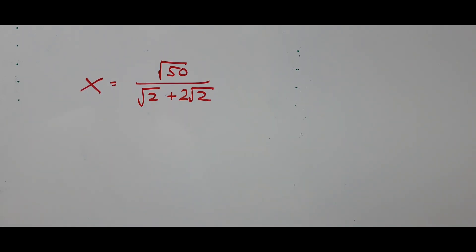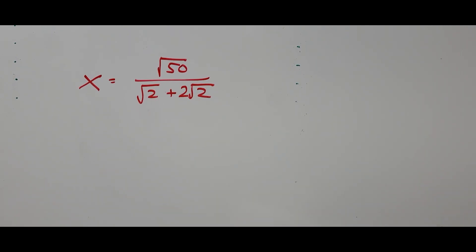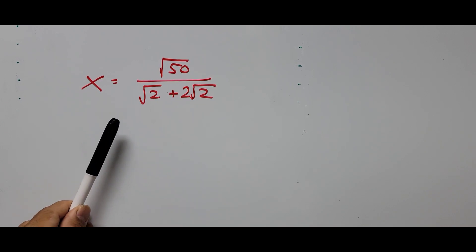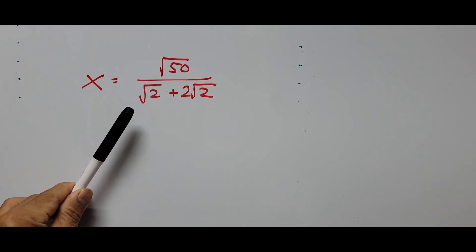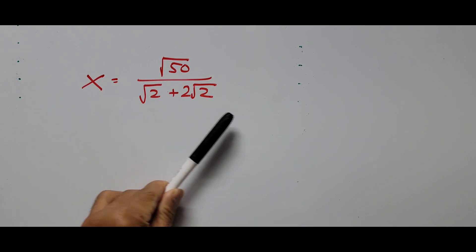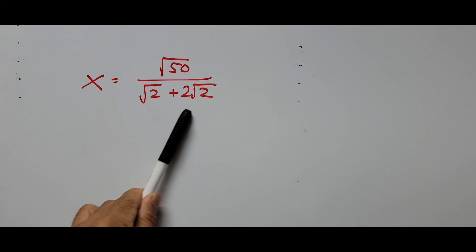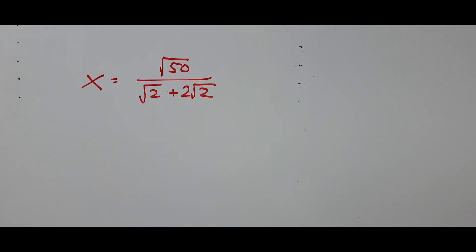Before we start solving the problem, please subscribe, like, and share this video, and feel free to leave a comment for any questions. So let's start solving. The rule in radicals for simplifying is that the denominator should not contain any radicals, so we have to get rid of the radicals in the denominator of the fraction and simplify.